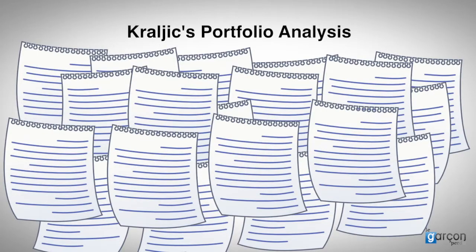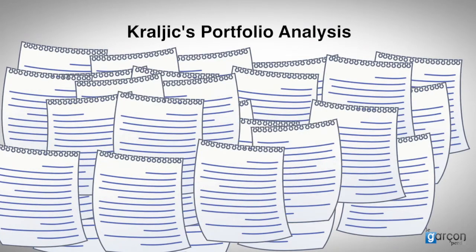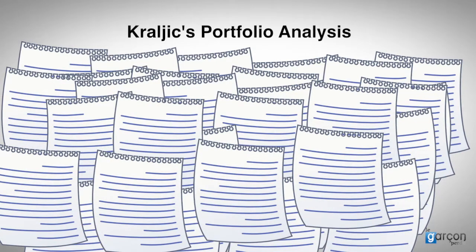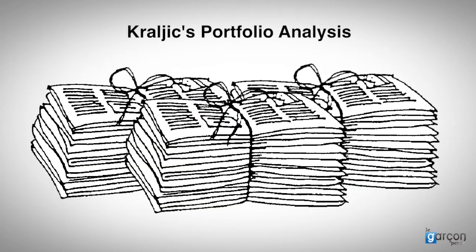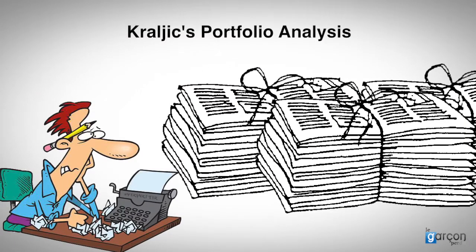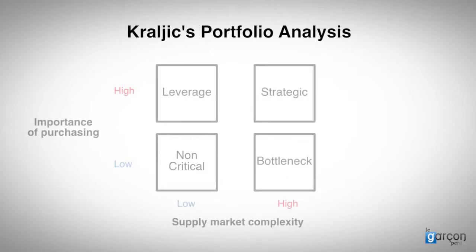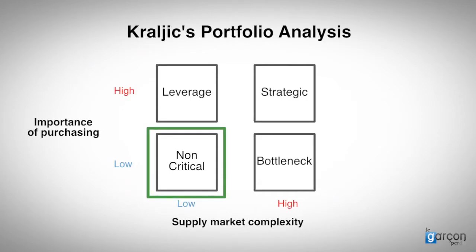As there are likely to be hundreds, if not thousands, of non-critical transactions, the real opportunity was in managing the volume of print jobs efficiently, rather than trying to get the best deal on every single job. So for non-critical categories, the recommended approach is simplification — reducing the indirect transactional costs.